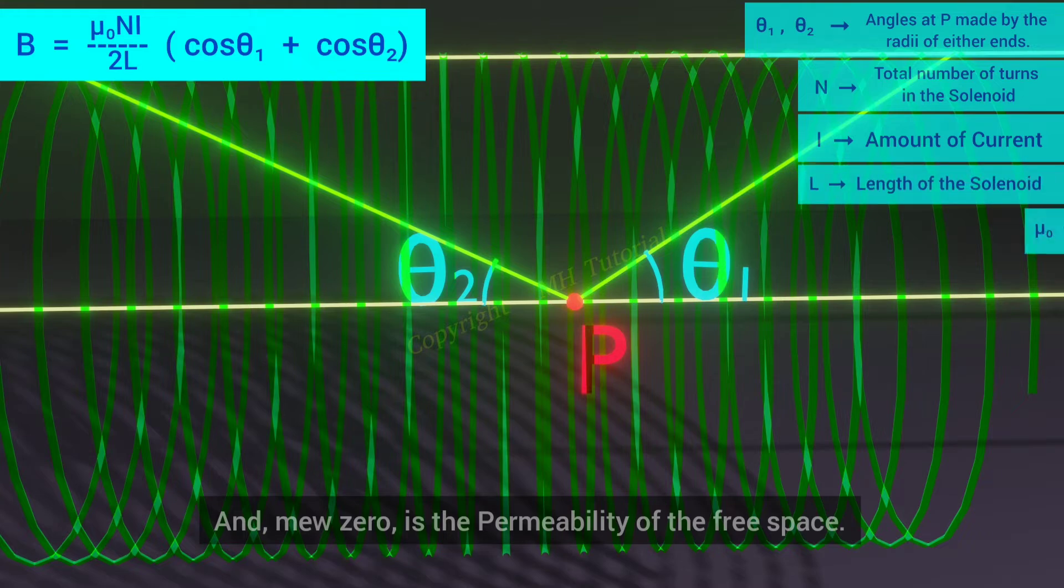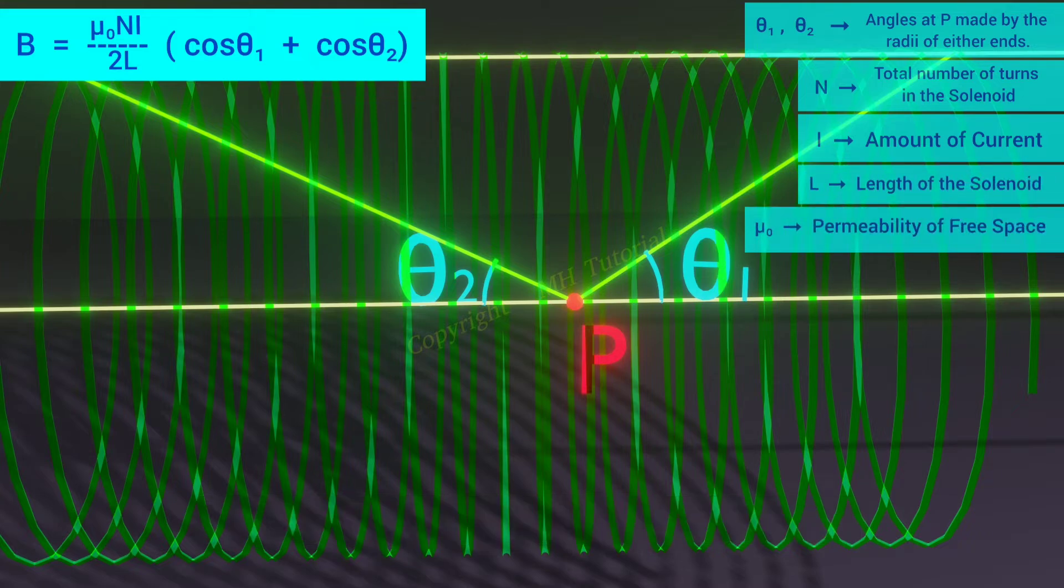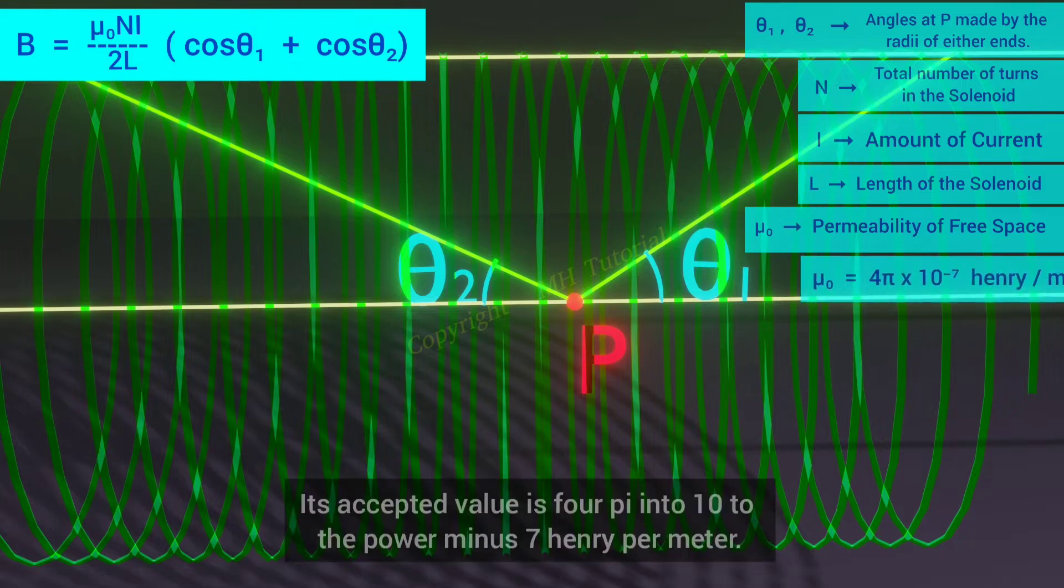And mu0 is the permeability of the free space. Its accepted value is 4 pi into 10 to the power minus 7 henry per meter.